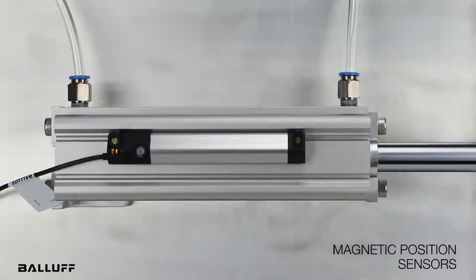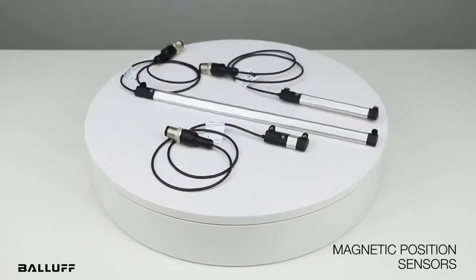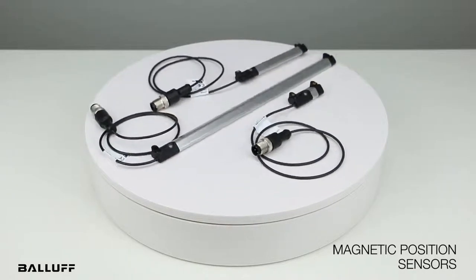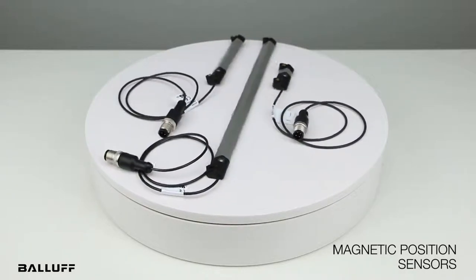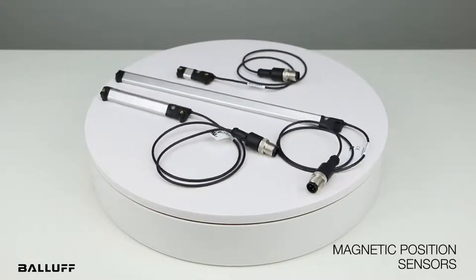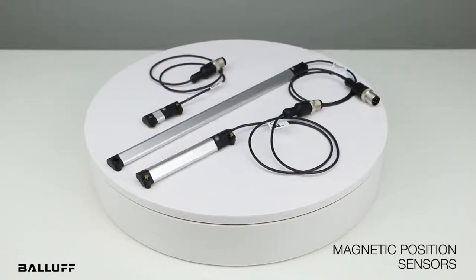The BMP Magnetic Position Sensors are available in eight different measurement ranges from 32 to 256 millimeters in 32 millimeter increments. You can also customize the measuring range along the entire stroke using the TEACH function. Each size comes with three options for connections, giving you 24 variants to choose from for your specific needs.